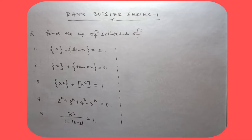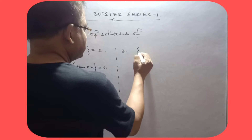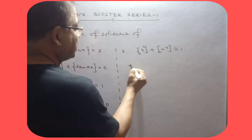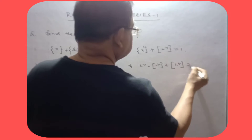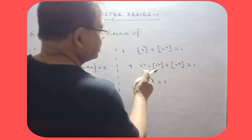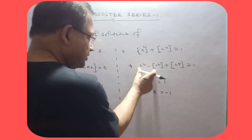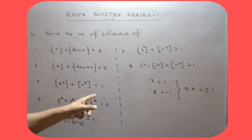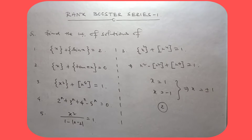Now the number of solutions of fractional part of x² plus greatest integer of x² equal to 1. This means x² minus greatest integer of x², plus greatest integer of x², equals 1 — so simply x² = 1. This gives x = 1 and x = −1, at which the expression becomes 0 + 1 = 1, which satisfies the equation. So the number of solutions is 2.